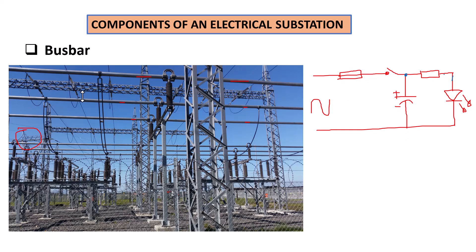The size of these bus bars will also depend on the current they are carrying, so they can be very large if they're carrying very high current. On top of a 400 kilovolt or 765 kilovolt high-voltage substation, you're going to have thicker metal bars as your bus bar. In the case of electronics or electrical circuitry as well, you should have thicker wires if you're going to be carrying large amounts of current.